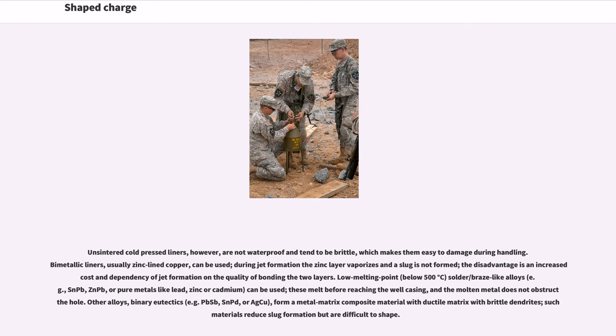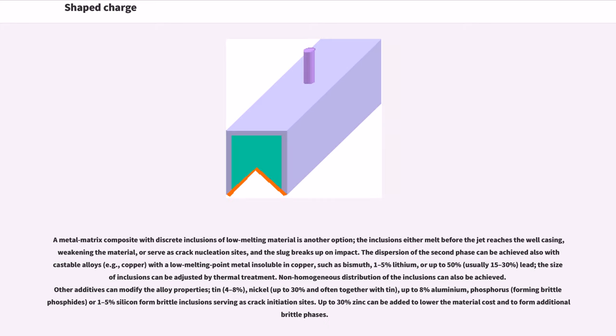Low melting point, below 500 degrees Celsius, solder/braze-like alloys, for example SnPb, ZnPb, or pure metals like lead, zinc or cadmium, can be used. These melt before reaching the well casing, and the molten metal does not obstruct the hole. Other alloys, binary eutectics, for example PbSb, SnPb, or AgCu, form a metal matrix composite material with ductile matrix with brittle dendrites. Such materials reduce slug formation but are difficult to shape. A metal matrix composite with discrete inclusions of low-melting material is another option. The inclusions either melt before the jet reaches the well casing, weakening the material, or serve as crack nucleation sites, and the slug breaks up on impact. The dispersion of the second phase can be achieved also with castable alloys, for example copper with a low-melting point metal insoluble in copper, such as bismuth, 1-5% lithium, or up to 50%, usually 15-30%, lead. The size of inclusions can be adjusted by thermal treatment. Non-homogeneous distribution of the inclusions can also be achieved.